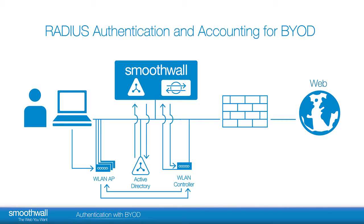Once access is granted, the wireless controller should be configured to send a message to the Smoothwall. The Smoothwall can then apply the appropriate filtering and rules to the user based on group membership, or the default group if none have been specifically set for that user. The user may now access the internet.